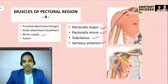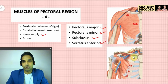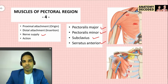The action of pectoralis minor is to help in protraction of the scapula along with serratus anterior, and it also acts as an accessory muscle of respiration. Subclavius is a small muscle with proximal attachment from the first rib near the costochondral junction, and distal attachment along the inferior surface of the clavicle in the subclavian groove. Its nerve supply is by the nerve to subclavius, and its action is to stabilize the shoulder girdle during movements of the shoulder joint.